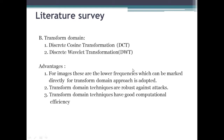In the transform domain, different transformations are used such as discrete cosine transformation, discrete wavelet transformation, etc. The advantage of transform domain data hiding is that lower frequencies can be marked directly using transform domain approaches. Transform domain techniques are also robust against attacks and have good computational efficiency.